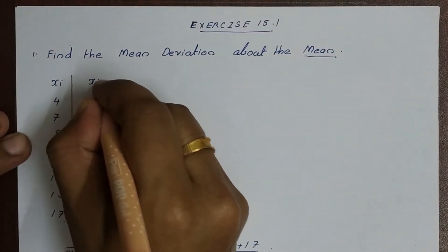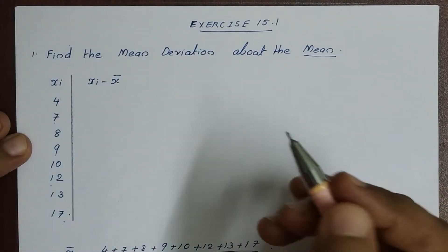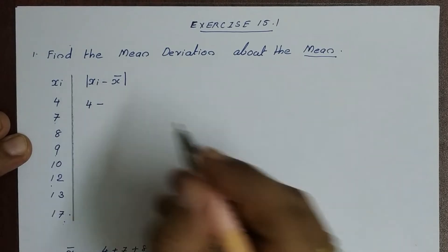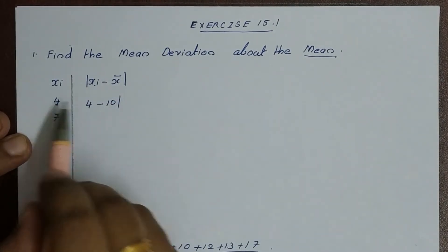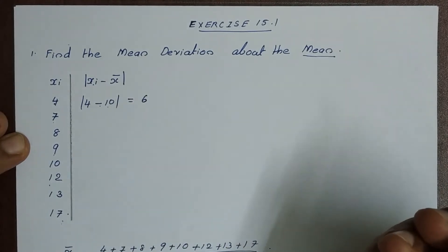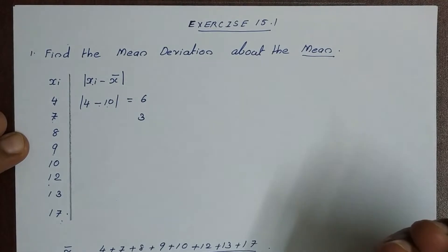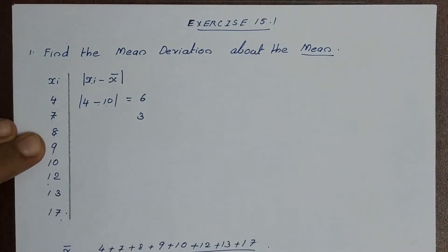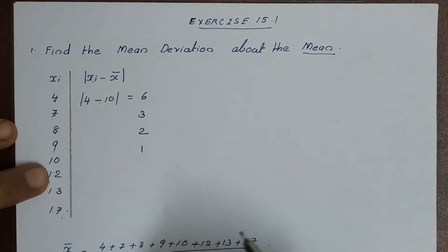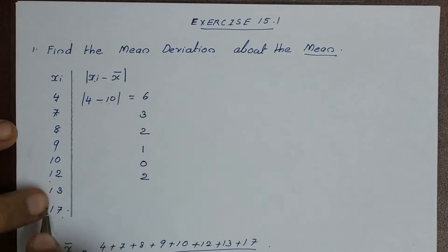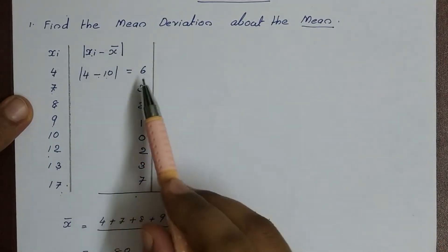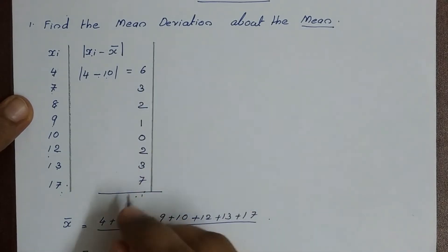In the next step we compute |xi minus x-bar|. Here we have 4 minus 10, absolute value is 6. Add 7 minus 10, absolute value is 3. Add 8 minus 10, absolute value is 2. Add 10 minus 9 is 1. Add 10 minus 9 is 1. Add 12 minus 10 is 2. Add 13 minus 10 is 3. This is 7. Then we add all the absolute values and it is 24.